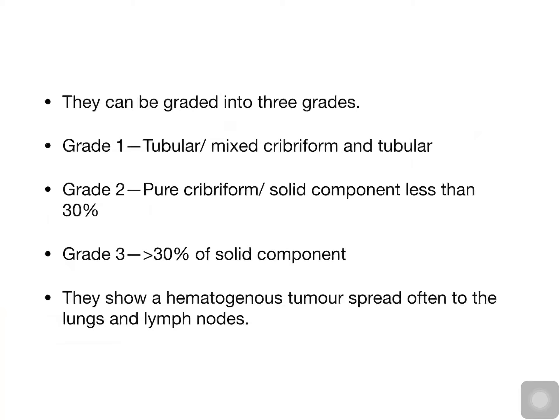Adenoid cystic carcinoma shows hematogenous spread and most commonly metastasises to the lungs, and second most commonly to the lymph nodes. In the lungs, they present as multiple nodules, but they can be asymptomatic and are not as aggressive as the primary tumour.